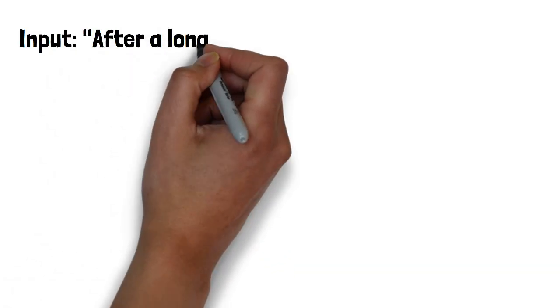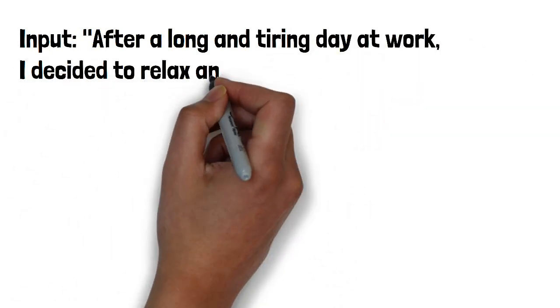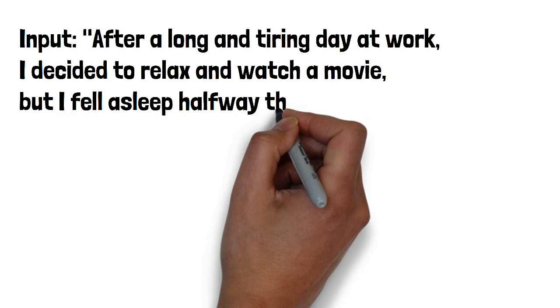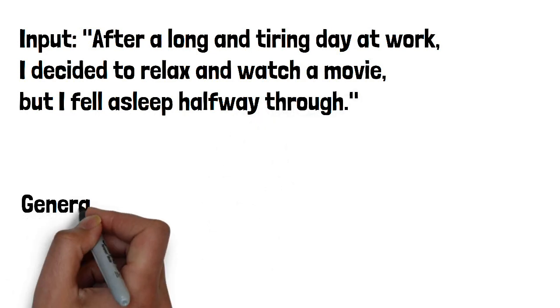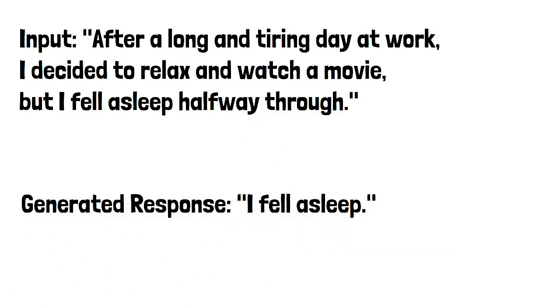For example, if the input sentence was 'after a long and tiring day at work, I decided to relax and watch a movie, but I fell asleep halfway through,' the generated response would simply be 'I fell asleep.' The model fails to incorporate the information about the speaker's long and tiring day at work, their intention to relax, and the fact that they fell asleep while watching a movie.